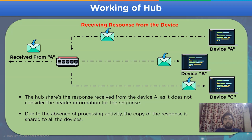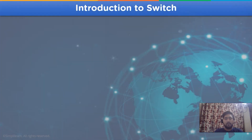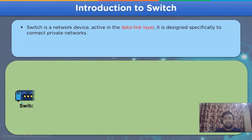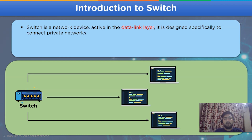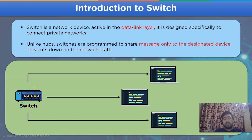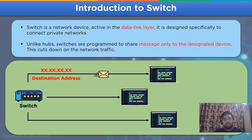With this we have covered all the important points for a network hub. Now let's move on to information on switches. The network switch is a networking device that is active in the data link layer of the OSI model and is designed specifically to connect private networks in a LAN channel. Switches are programmed to share messages only with the designated device mentioned in the header format of the message.